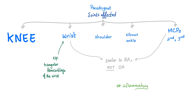What joints are affected in pseudogout? The knee is the number one joint. Also wrist, shoulder, elbows, ankle, and MCPs — specifically the second and third MCPs. In the wrist, specifically the triangular fibrocartilage. Notice wrist and MCP involvement — this is similar to rheumatoid arthritis because both are inflammatory, not to osteoarthritis, which is non-inflammatory.